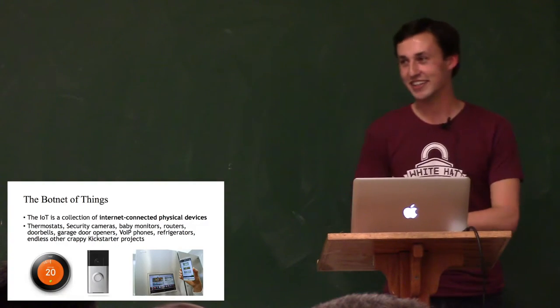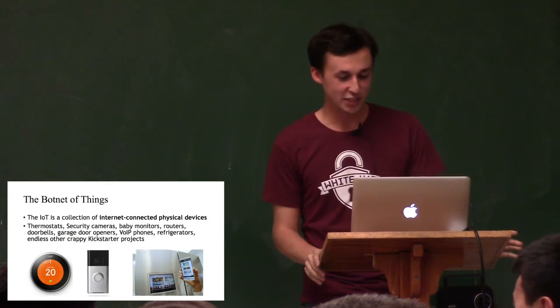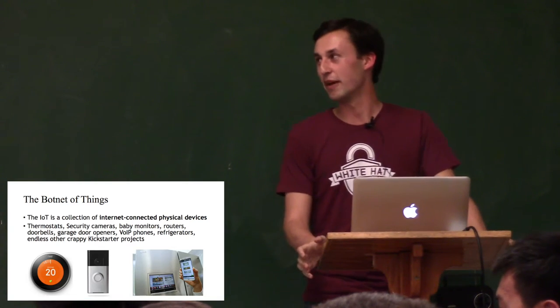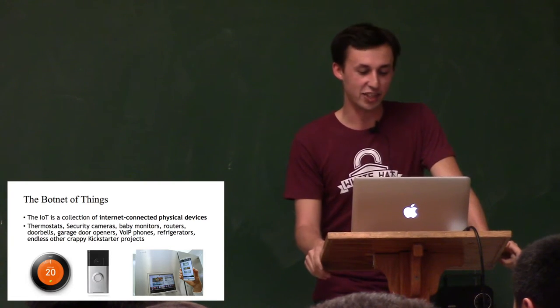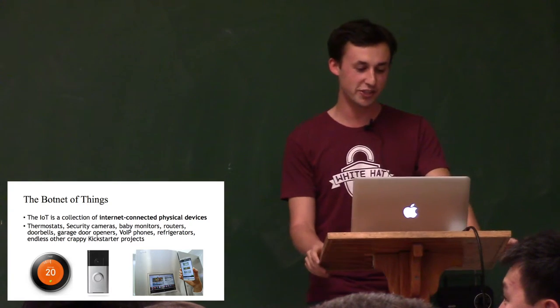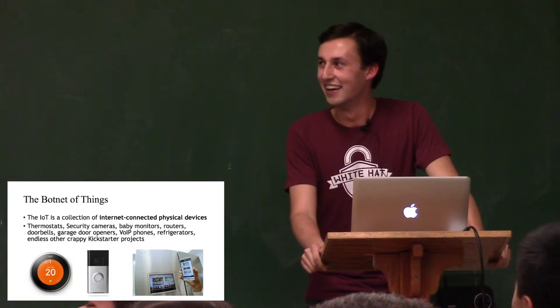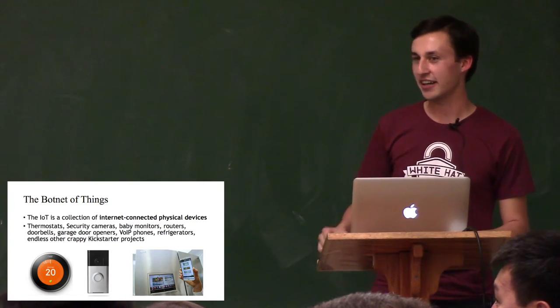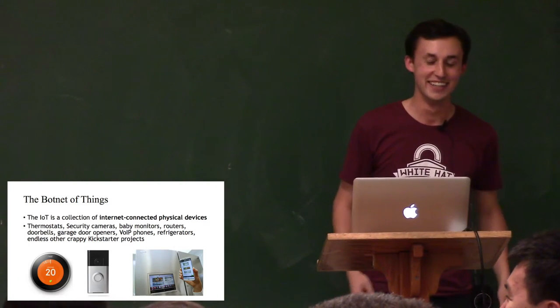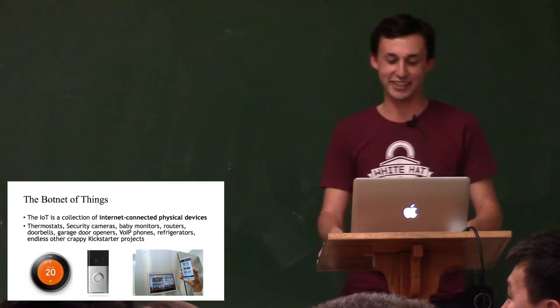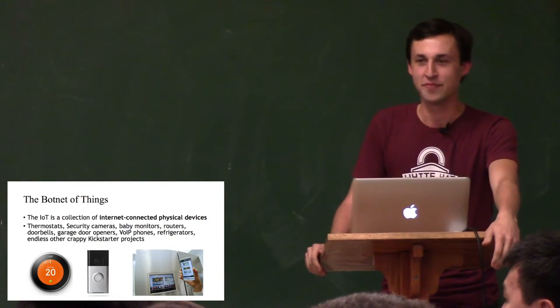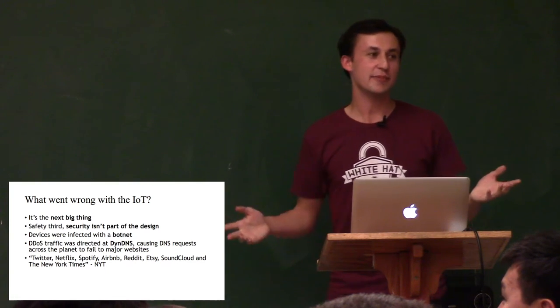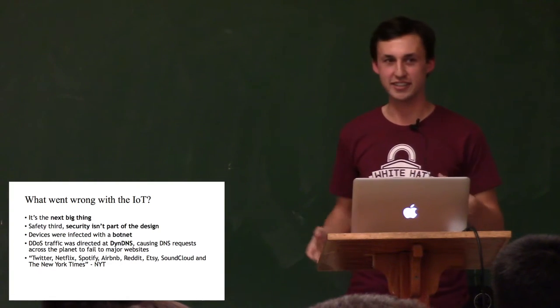So, for my final topic, the botnet of things, which is my way of saying the Internet of Things after our recent thing. So, the IoT is a collection of Internet-connected physical devices, as many of you are probably aware. And these contain things like thermostats, security cameras, baby monitors, routers, doorbells, garage door openers, VoIP phones, refrigerators, and endless other crappy Kickstarter projects. Here are some examples. So, we have a Nest. We have a Ring Internet-connected doorbell, which I am embarrassed to admit my parents have. I will not let them live that down, but they haven't removed it yet, and it makes me angry. And then, of course, the classic Twitter on a fridge.